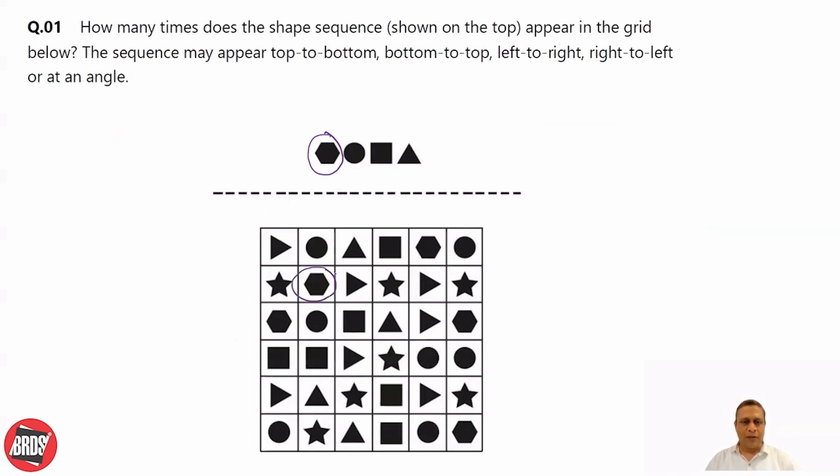Hexagon is here. Hexagon, circle, square, triangle - so this is one pattern. Circle, square, and we have triangle.